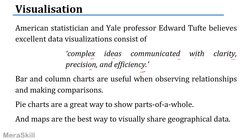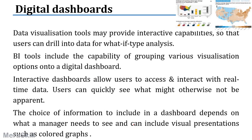Different types of diagrams are suited for different purposes. A bar chart or column chart will help you to observe relationships and make comparisons. A pie chart shows parts of a whole. Maps will help you to share your geographical data.